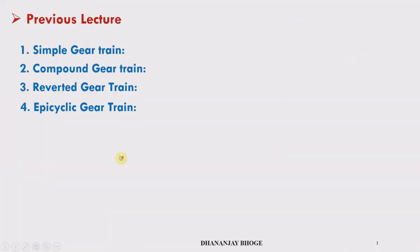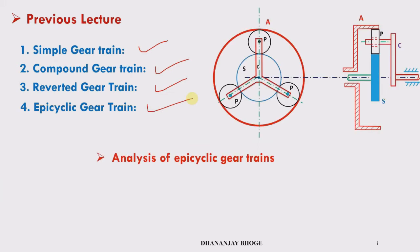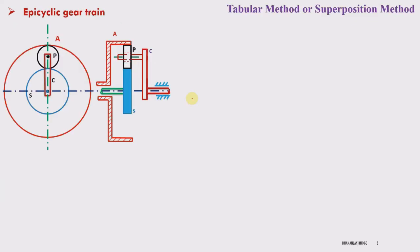We are studying gear trains. We have gone through the simple gear train, compound gear train, reverted and epicyclic gear train. Now in this lecture we will study the analysis of epicyclic gear trains. Since epicyclic gear trains constitute complex motions, a standard method called the tabular method or superposition method is used for their analysis.